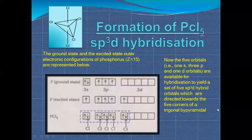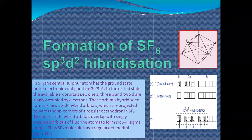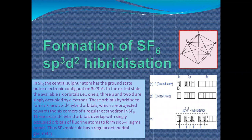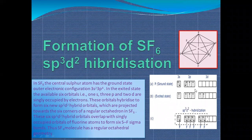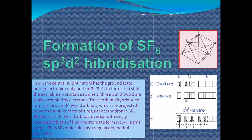Now let's move to sp3d2 hybridization, where we have six hybrid orbitals — one s, three p, and two d. The example is SF6. The ground state electronic configuration of sulfur has 3s completely filled and 3p with four electrons, two paired and two unpaired. In the excited state, electrons from 3p and 3s jump to the d orbitals to higher energy levels.